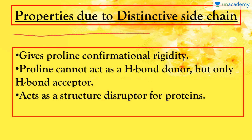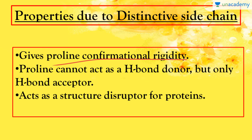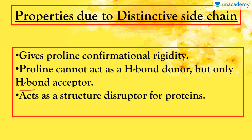Properties due to this distinctive side chain include that proline gives conformational rigidity to all proteins in which it is present. In alpha helices, after the first turn, proline can cause a kink in the helix. This kink is caused by proline's inability to complete the hydrogen bonding of the chain, which alters the geometry of the protein. Besides, proline cannot act as a hydrogen bond donor — it only acts as a hydrogen bond acceptor — and it acts as a structural disruptor of proteins due to its side chain.